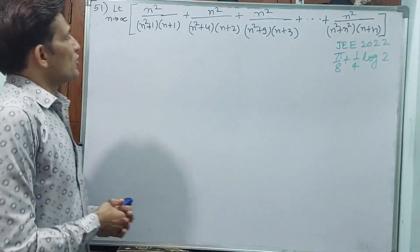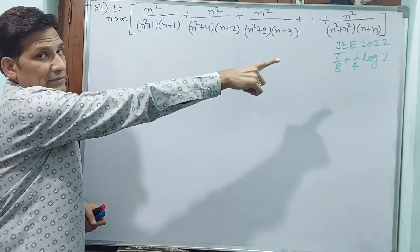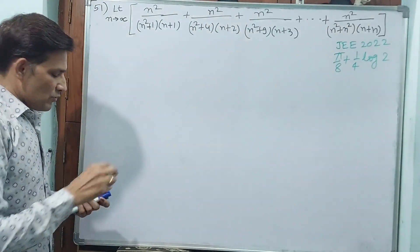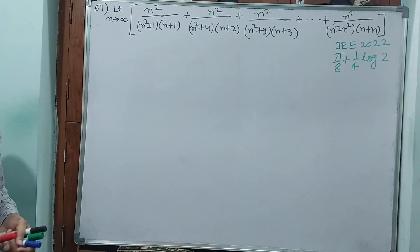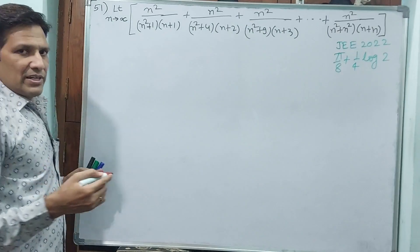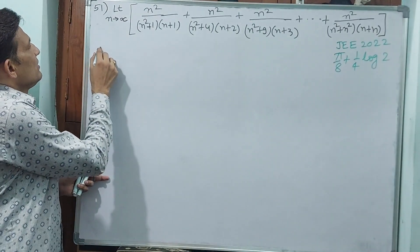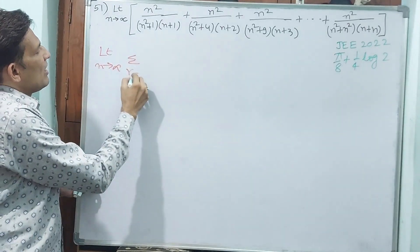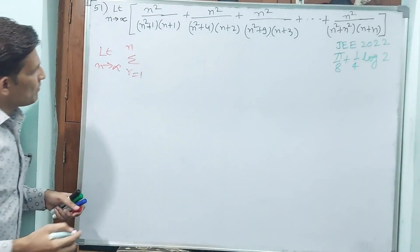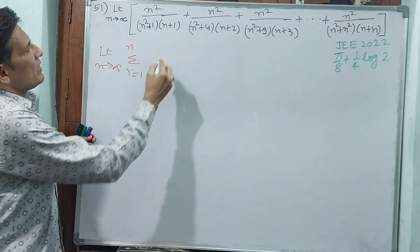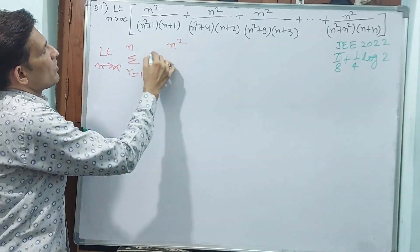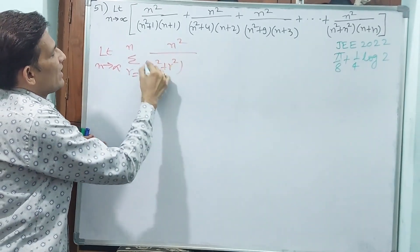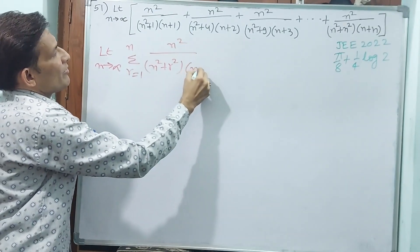That means here sigma r is going from 1 to n — from 1 squared to n squared. Limit n tends to infinity, sigma r equals 1 to n: numerator is n squared, denominator is n squared plus r squared, into n plus r.